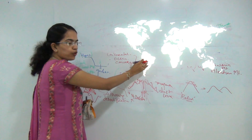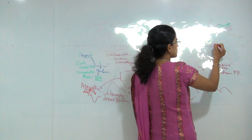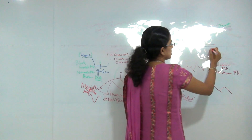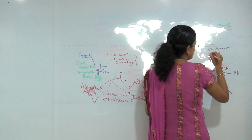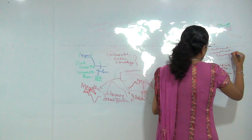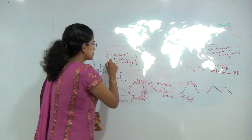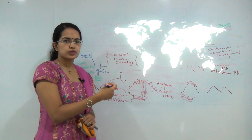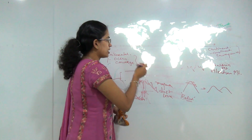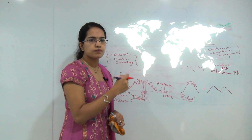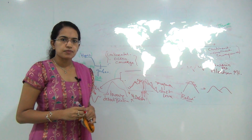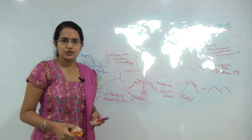Another example of a fold mountain range is the Himalayas, where you have two continental plates converging — continent-continent convergence. We will understand these concepts in more detail when discussing the plate tectonics theory of mountain building in the next class. We will be covering the two most important theories of mountain building in the subsequent class. You can subscribe to the Exam Race channel for further updates. Stay tuned, have a good day.